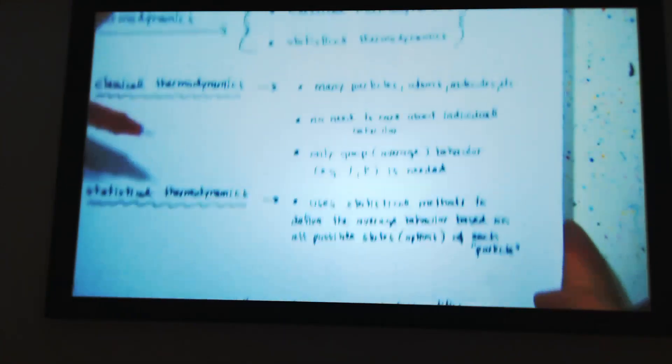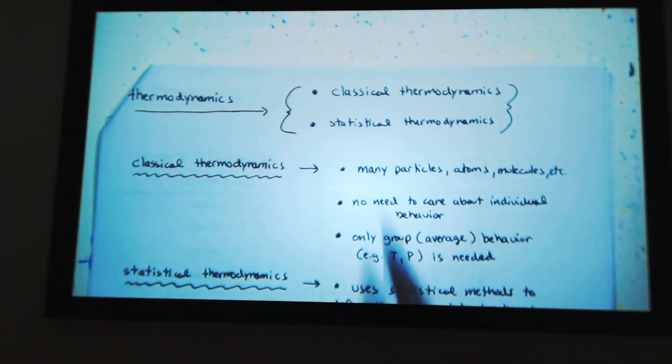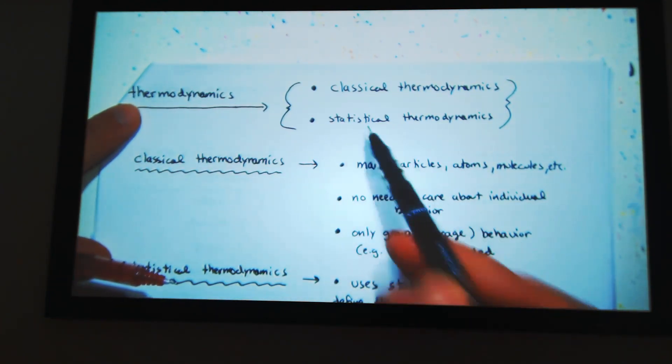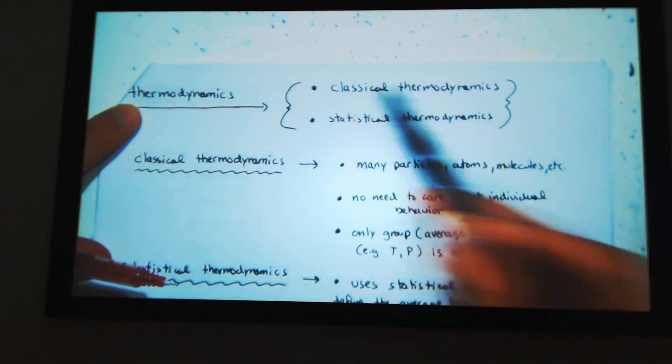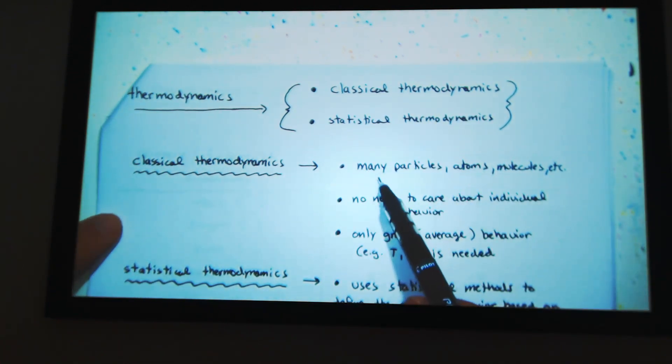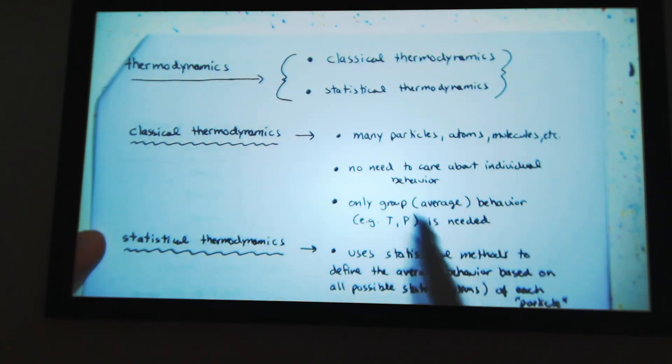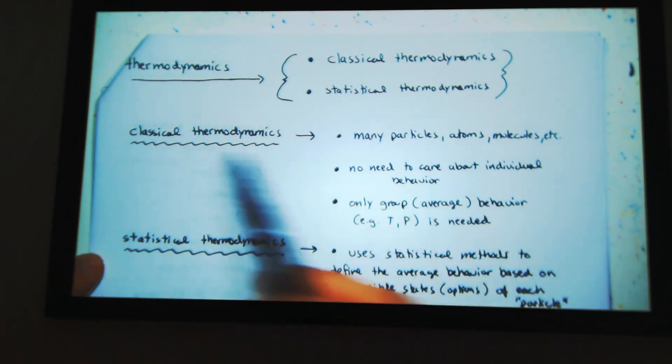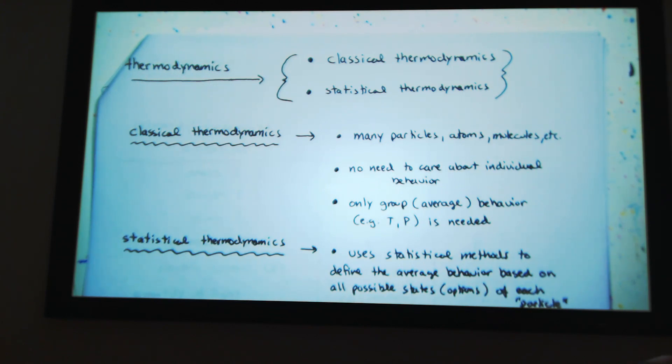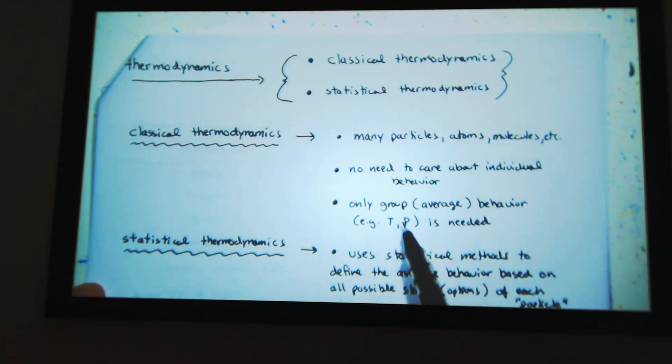There's classical thermodynamics and statistical thermodynamics. We're mainly dealing with classical thermodynamics. Classical thermodynamics: many particles, atoms. You don't need to know about individual behavior. I gave the pictorial representation of how you can represent the temperature of a system based off vibrational modes, but that was just a pictorial representation. You don't, in classical thermodynamics, you just need to know the average temperature and pressure of my system and how big the volume is, the boundary. You don't need to know that. So it's only the group or average behavior and temperature pressure is needed.